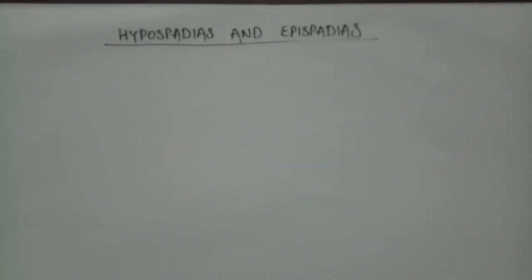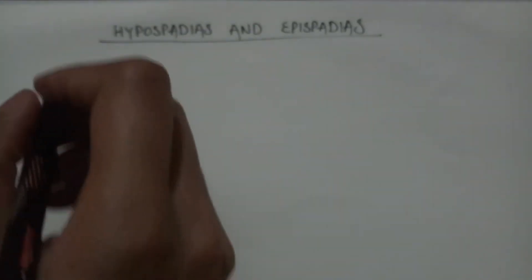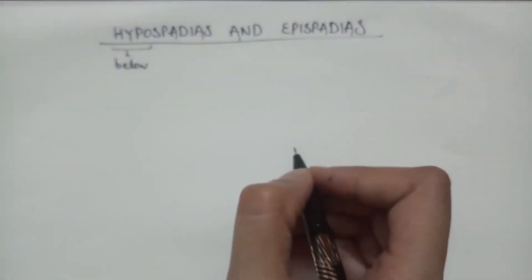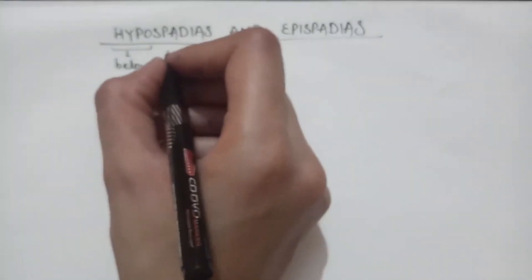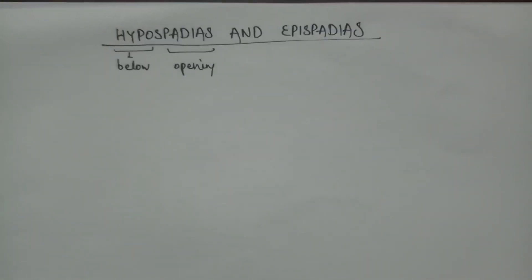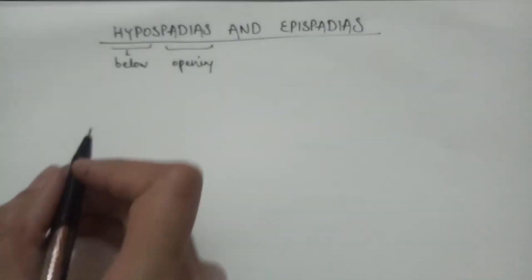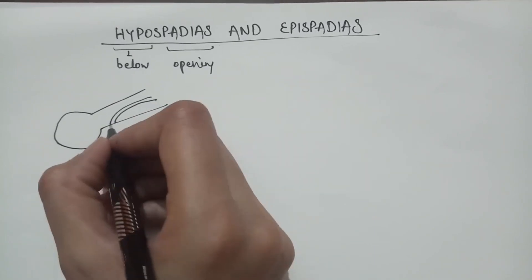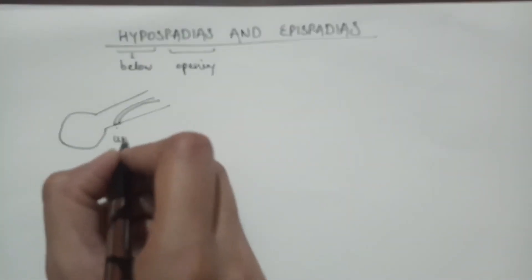In this video we are going to study hypospadias and epispadias. Hypo means below and spadia means opening. The urethral opening is at the under surface of the penis — urethra is opening at the underside of the penis.